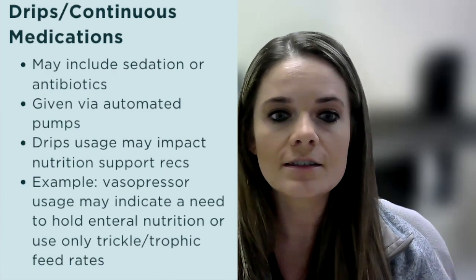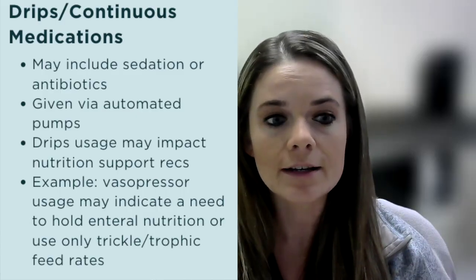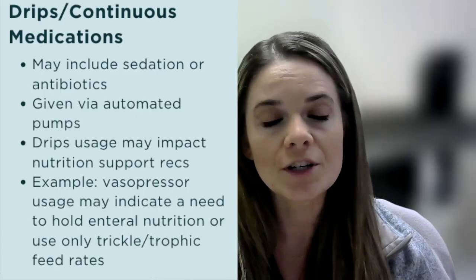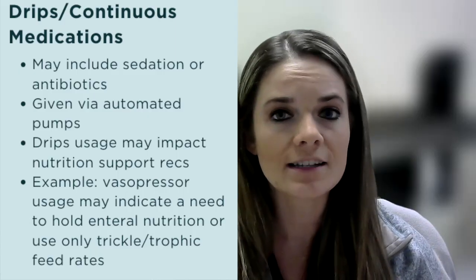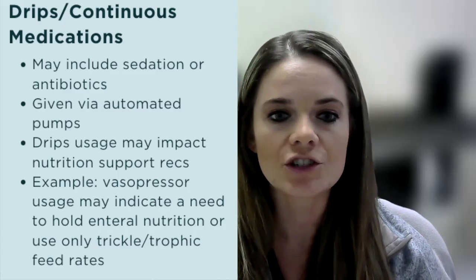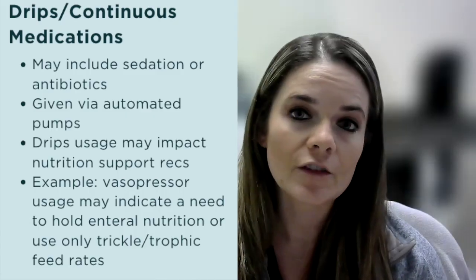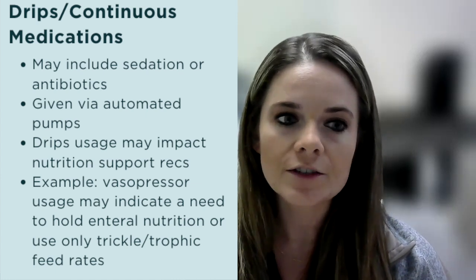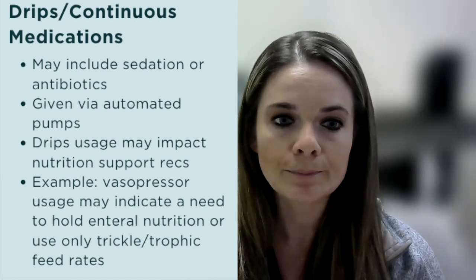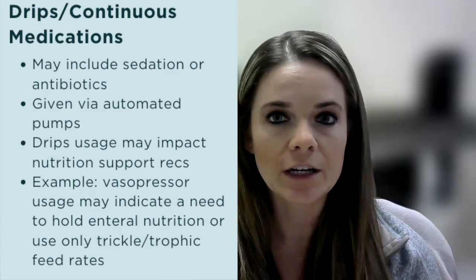A vasopressor is considered a type of drip, and drips are another name for continuous medications such as sedation and antibiotics given in the ICU setting. Drips are given via automated pumps. When assessing a patient, it is imperative to look at the drips to see which medications your patient is receiving, as medications can determine your course of action as a clinician. For example, if a patient is receiving vasopressors, you may want to either hold tube feeding altogether or give a very small amount — what we call trickle feeds. To learn more, please review our YouTube video entitled Enteral Nutrition Topics: Introduction to Pressors.